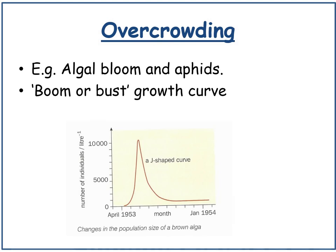An example of a boom and bust growth curve would be an algal bloom: there is very rapid exponential growth, but when there are so many organisms in the same area, the food supply becomes scarce and the algal population then rapidly declines. This is called a boom and bust growth curve due to overcrowding.